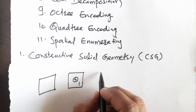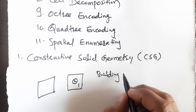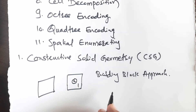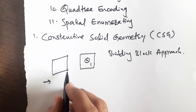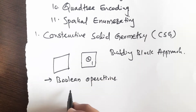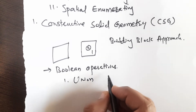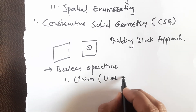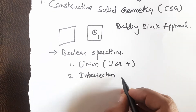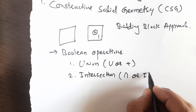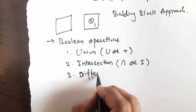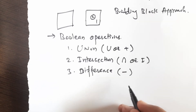Constructive Solid Modeling is also called the building block approach. In this method, different Boolean operations are used to create the required geometry. The first Boolean operation is Union, also called Unite, with the symbol U or plus. The second is Intersection, with the symbol ∩ or I. The third is Difference, with the symbol minus.